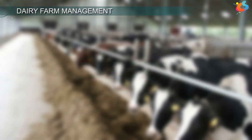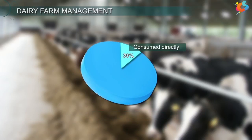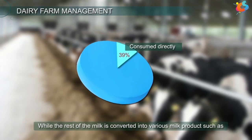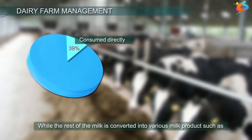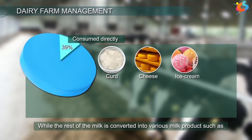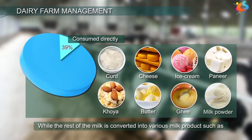Out of the total milk obtained every day, only 39% is consumed directly, while the rest is generally converted into various milk products such as curd, cheese, ice cream, cottage cheese or paneer, koya, butter, ghee, milk powder, etc.